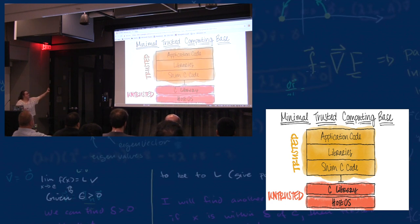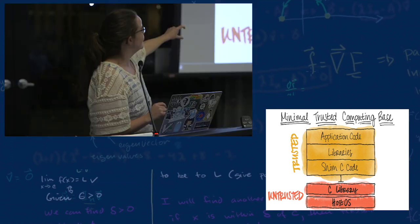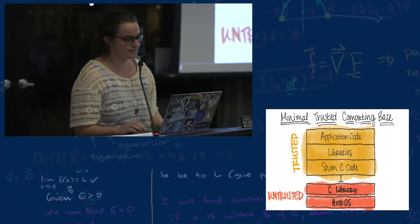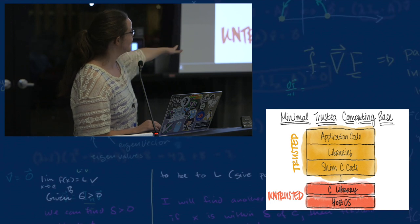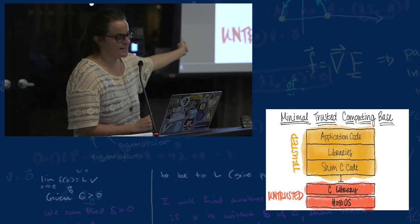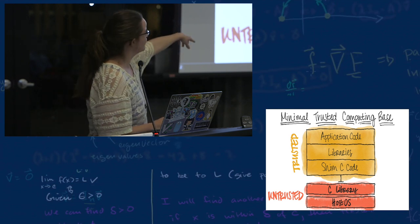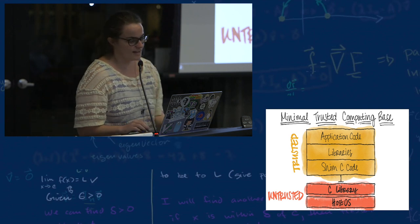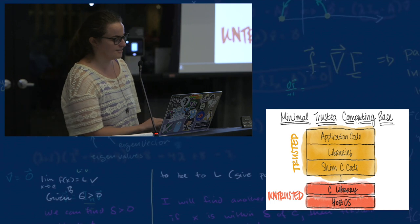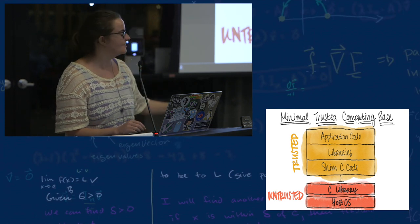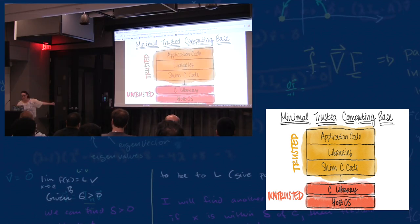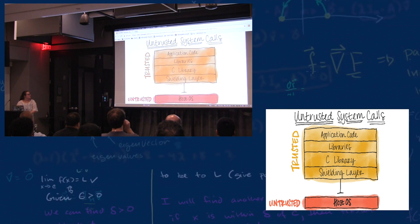Then they went the opposite way and decided to make it super minimal, put the C library on the outside, and have some shim C code in the actual enclave. This raised security concerns because now you have to protect the confidentiality of things being passed to the C library. The trusted computing base is super small, but the lack of security is concerning.